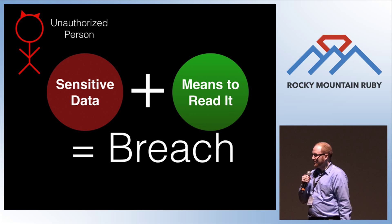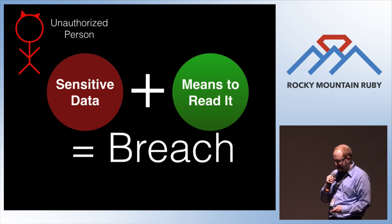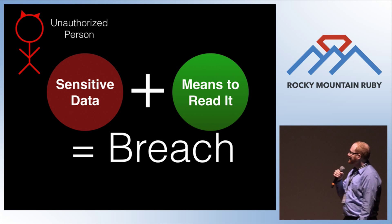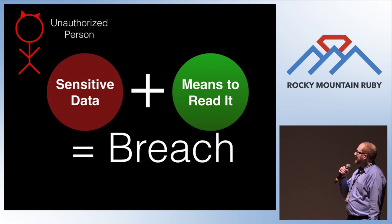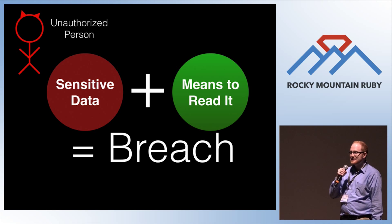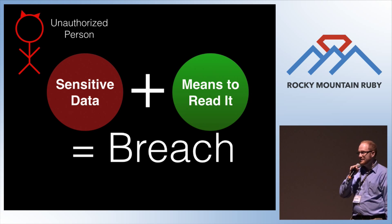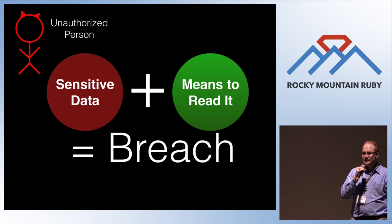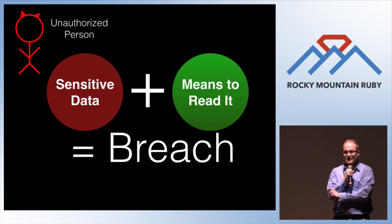So what is a data breach? An unauthorized person has access to sensitive data and the means to read it — that is a breach. The second caveat is important, and this is why encryption can be used to say we didn't have a breach in the first place.